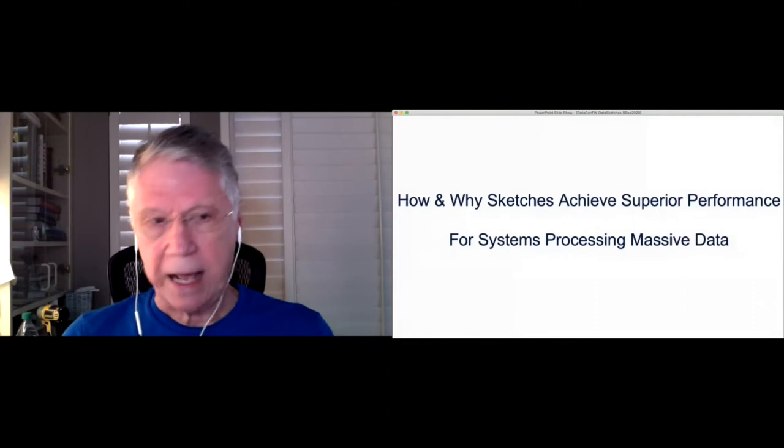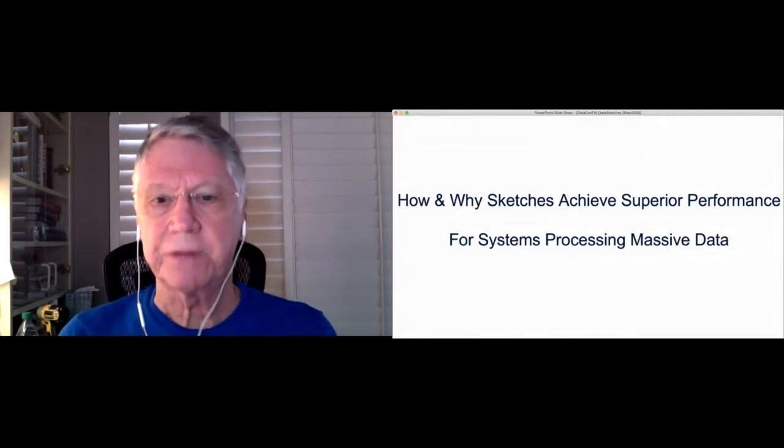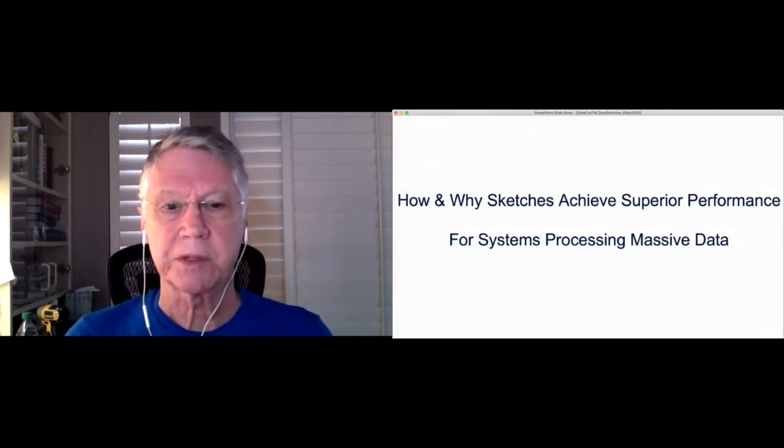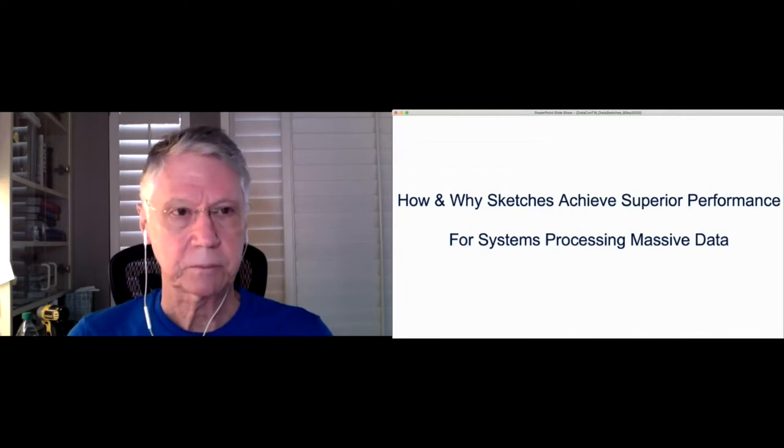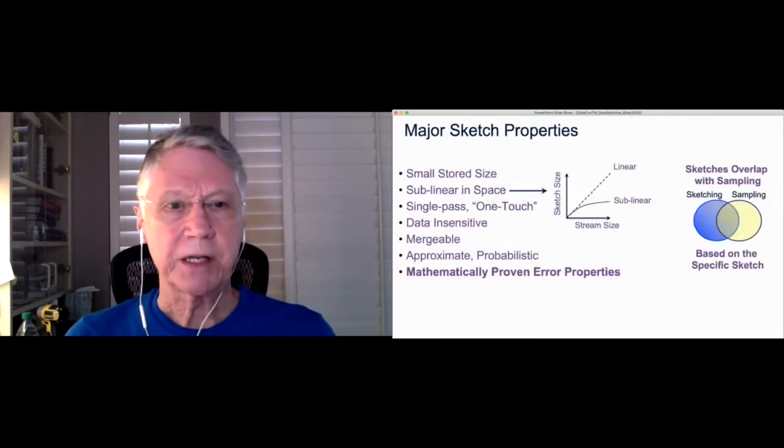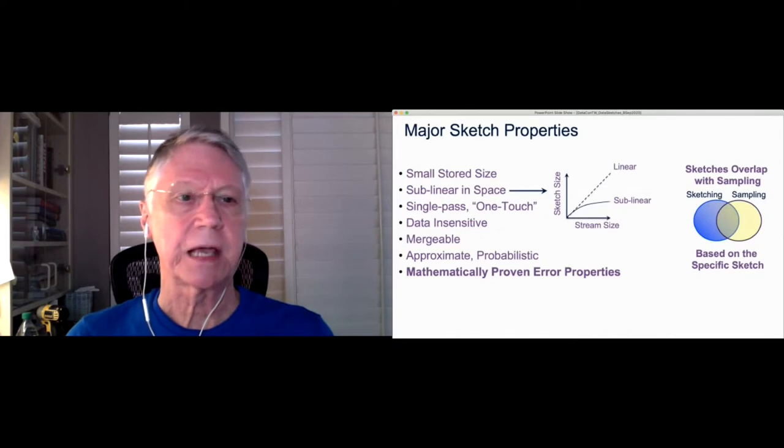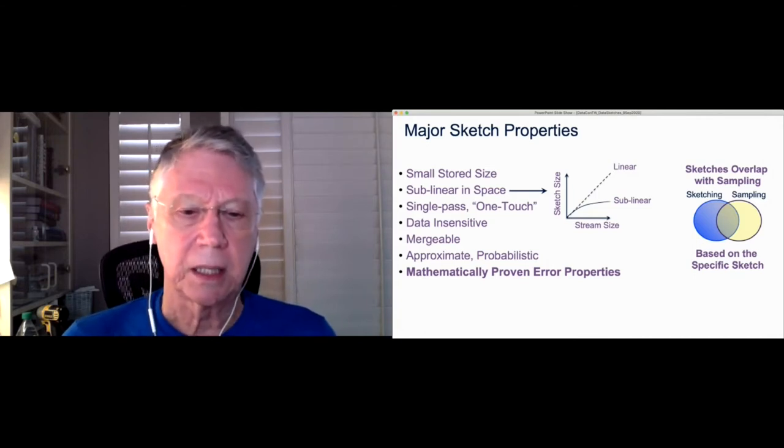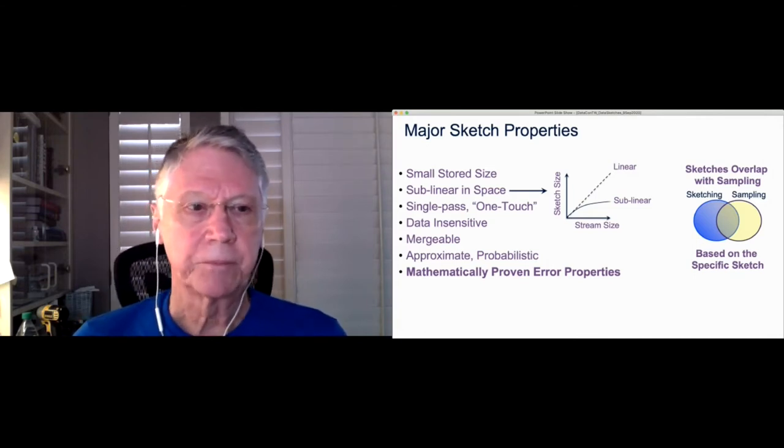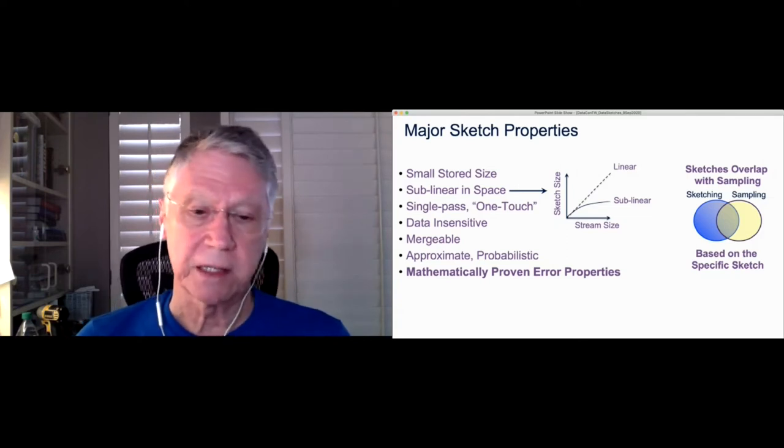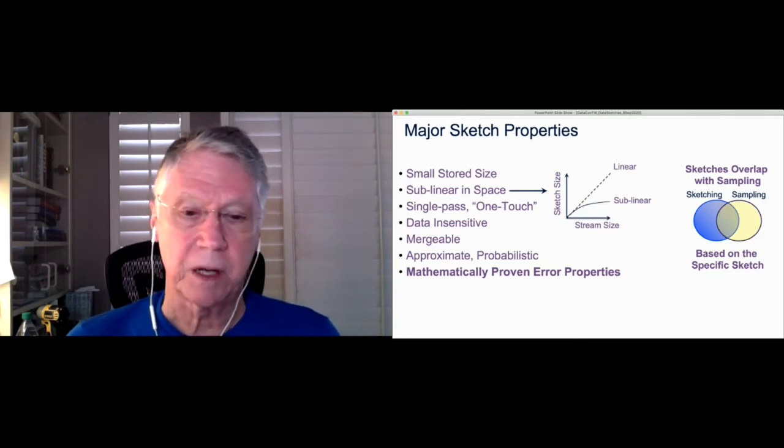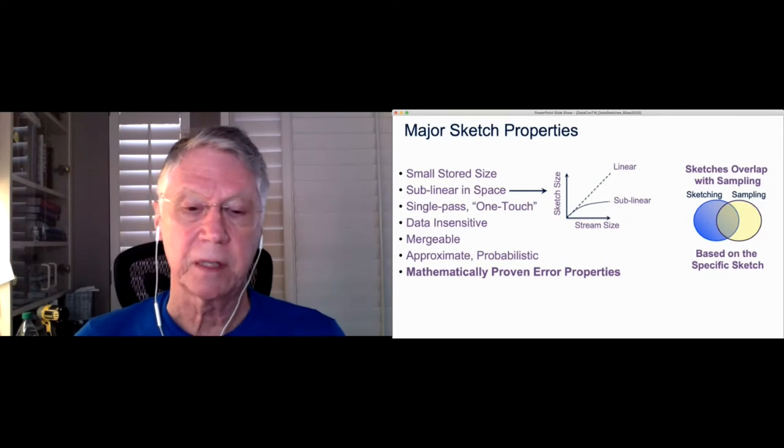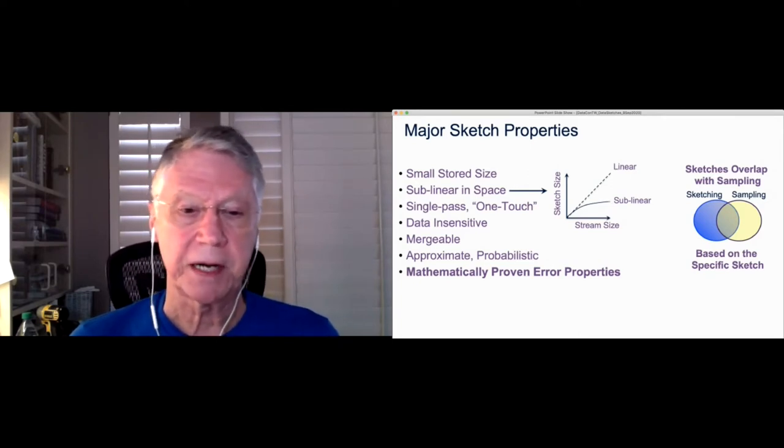So we want to ask how and why sketches achieve this superior performance for systems processing this massive data. So the key properties of these sketches is they have small stored size. That is, they're small, certainly compared to the original big data that you're looking at. And by small, it varies a lot. But small can be from hundreds of bytes to kilobytes to megabytes. But compared to the terabytes or petabytes of your big data, that's still quite small.